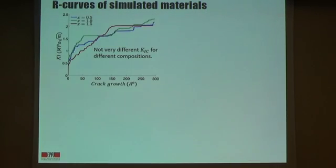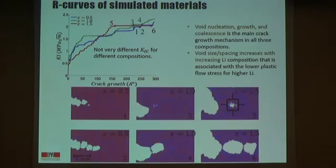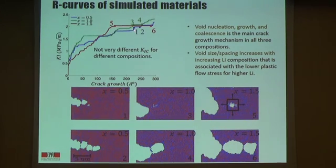This ensures we have a pure and accurate K-field boundary condition. This is the R-curve we measured. As you can see, we don't see really different K1C values for different compositions. The values are higher than the experimental values, which we expect because it is not easy to create a very good amorphous MD system and the yield stresses are higher than experimental values. But we can look into the mechanisms, and in almost all cases we do see some voids created in front of the crack and then coalescence afterwards.